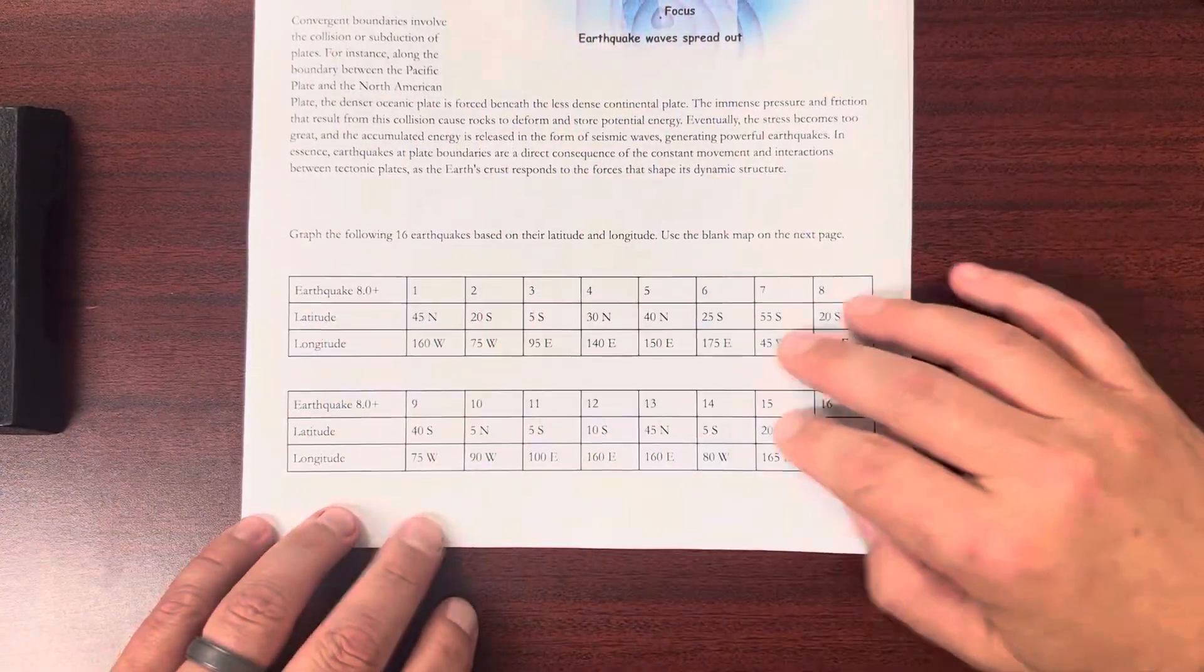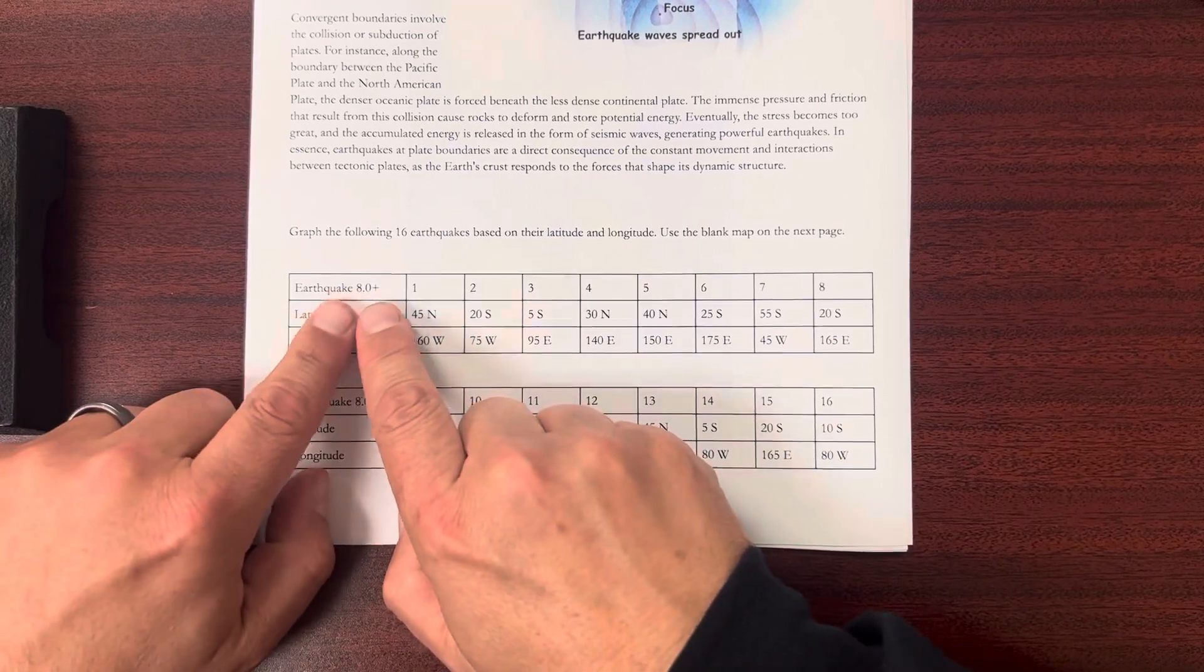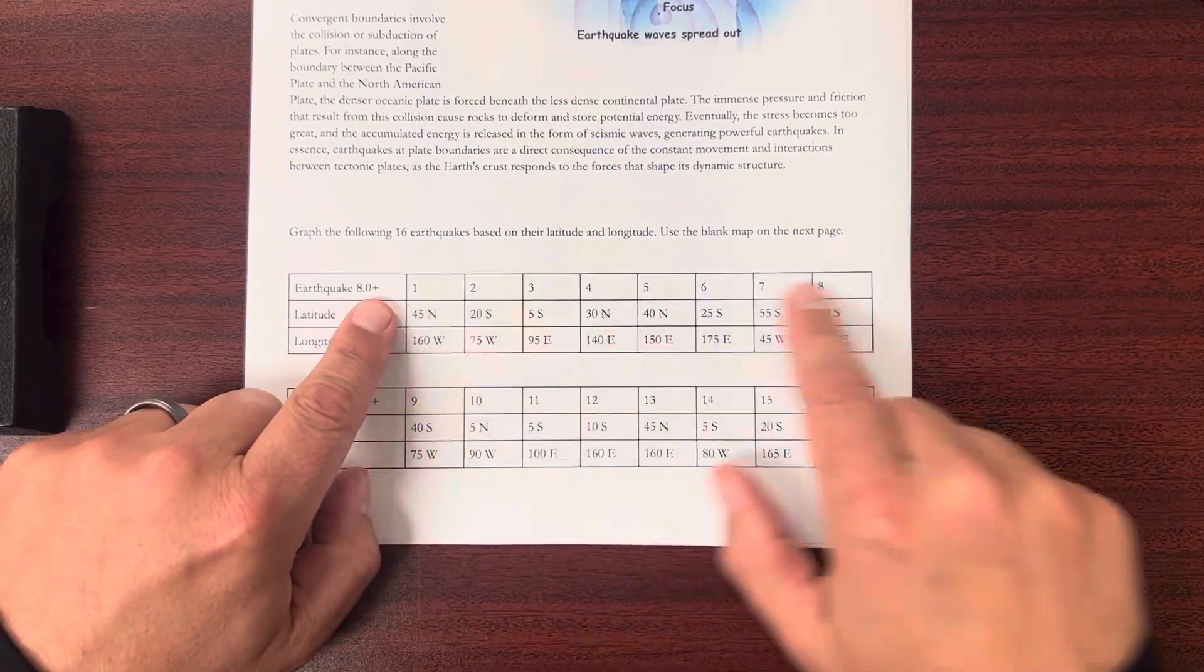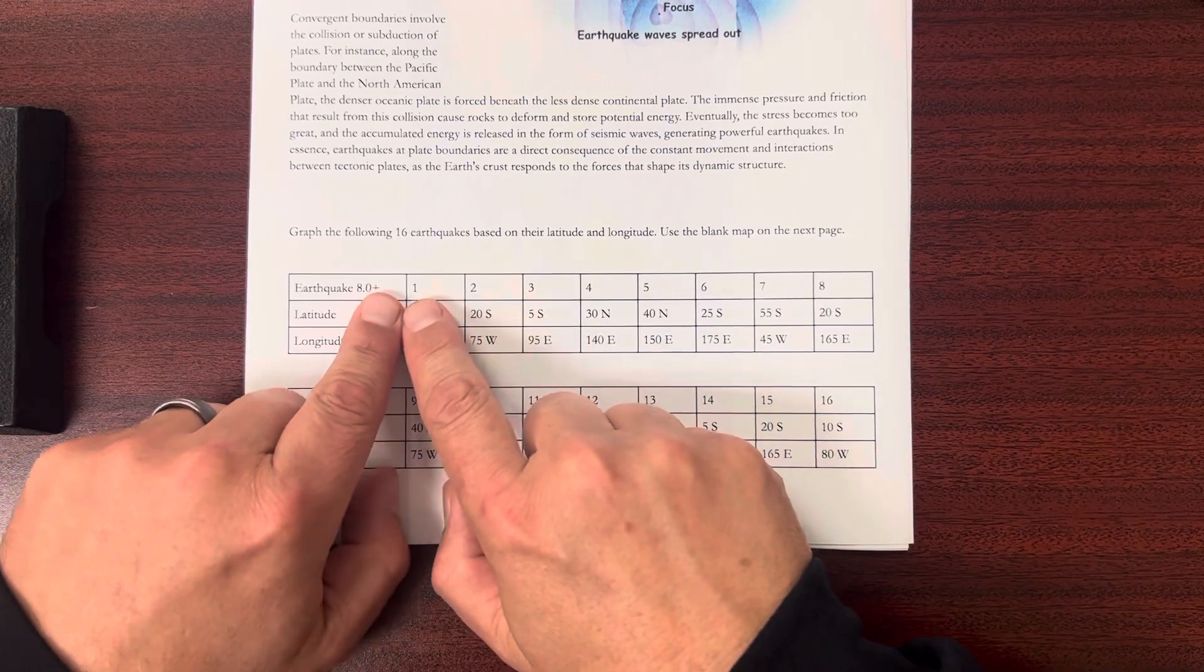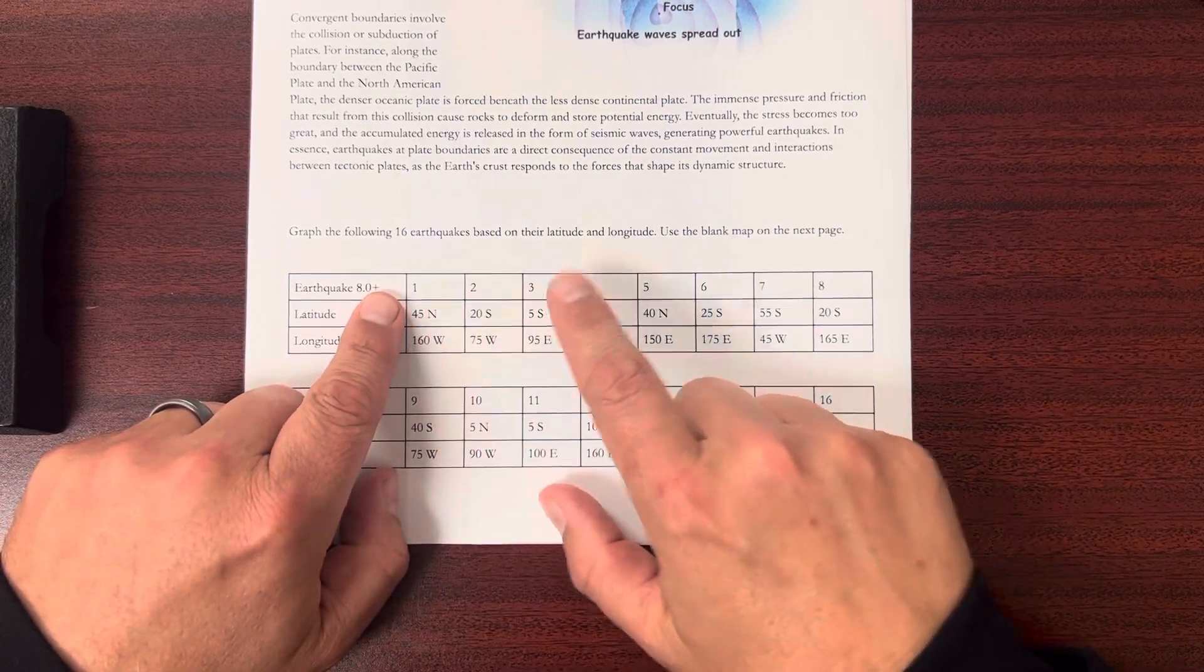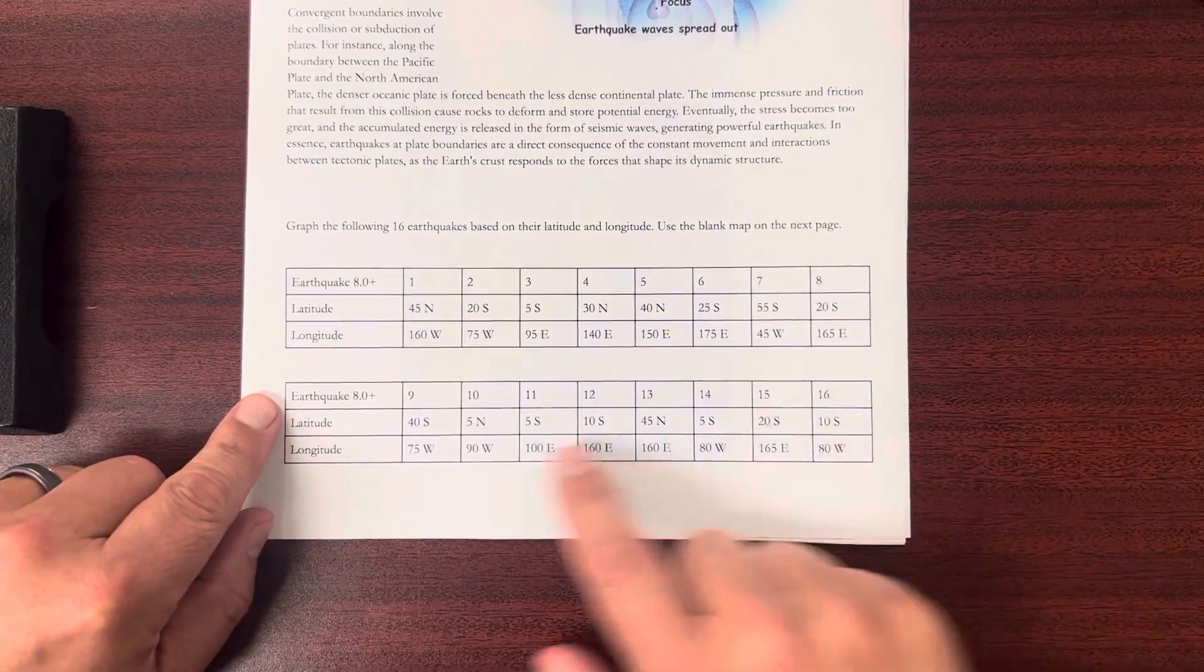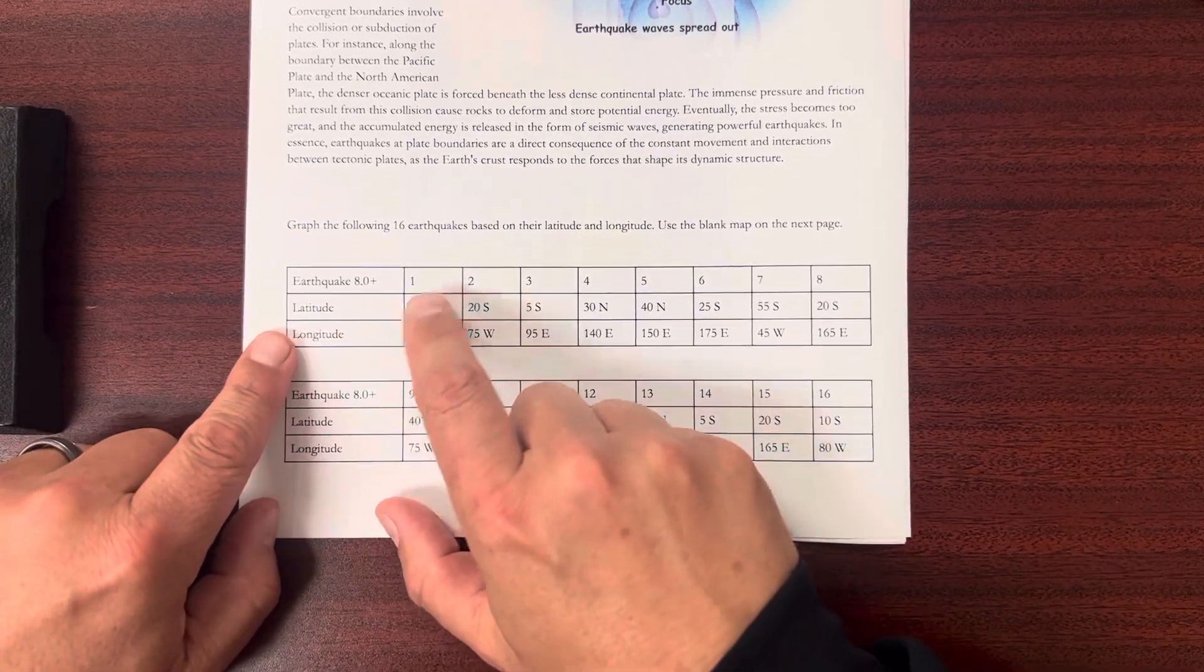So you've got your data table down here, and it says earthquakes 8.0 plus. And then it just lists them out. The numbers on the top are just for earthquake 1, earthquake 2, earthquake 3, earthquake 4, 5. And you can see that there's 16 earthquakes. There's also latitude and longitude for each earthquake.